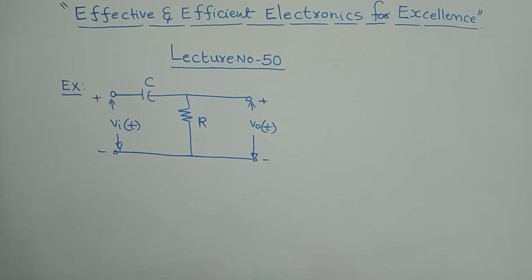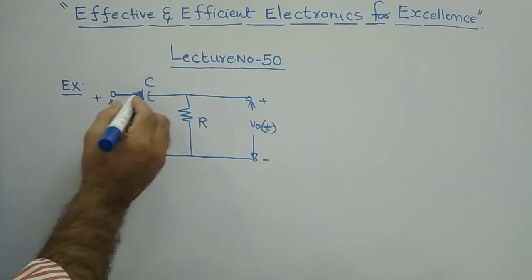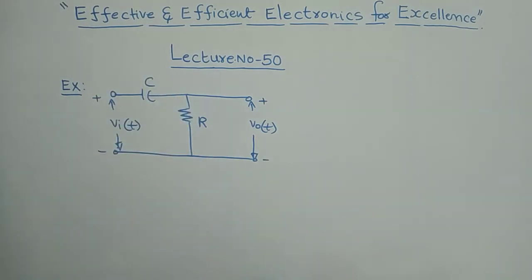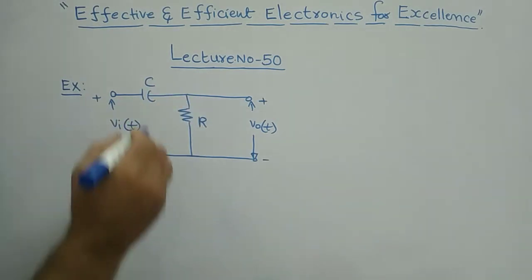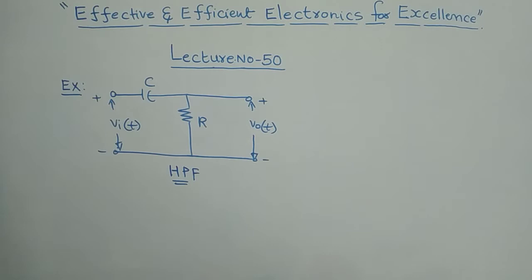Welcome to another presentation. In this presentation I am going to explain the transfer function of a given RC circuit example. In the previous presentation we had resistance in place of capacitance, and capacitance in place of resistance. In this circuit, connecting the capacitance in this combination with R is called a high pass filter — a simple high pass filter.